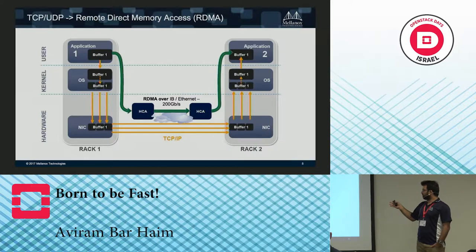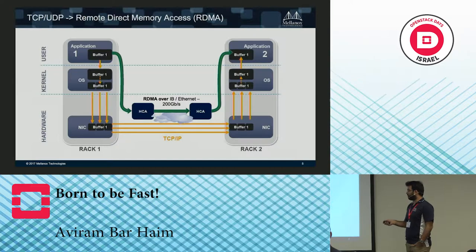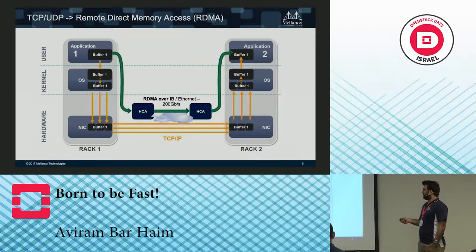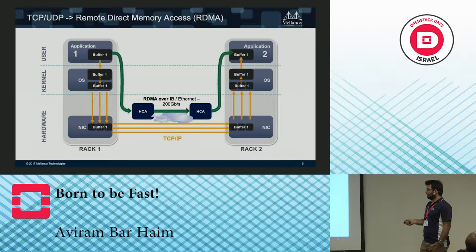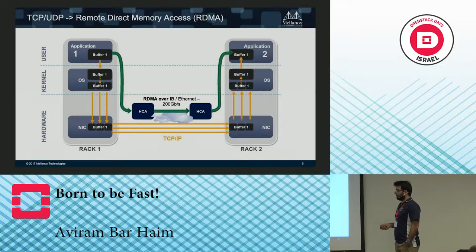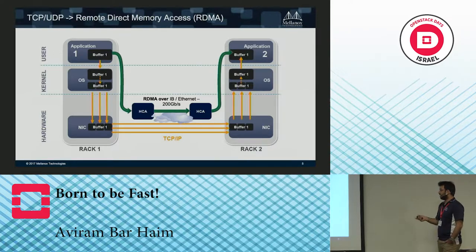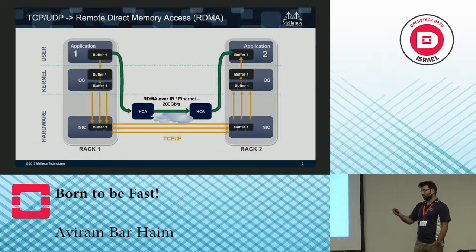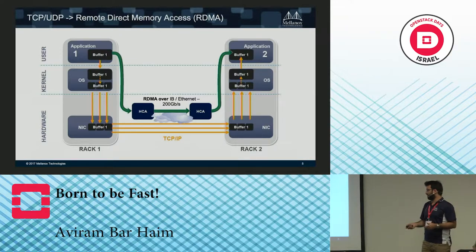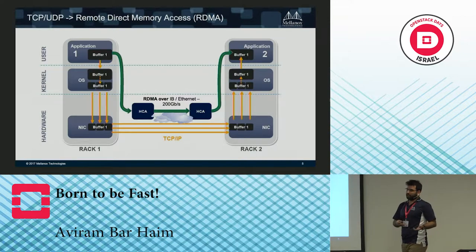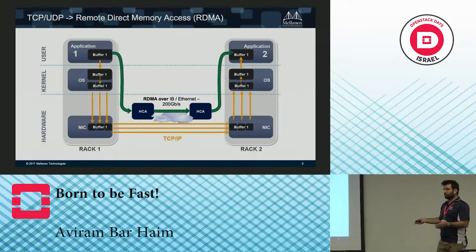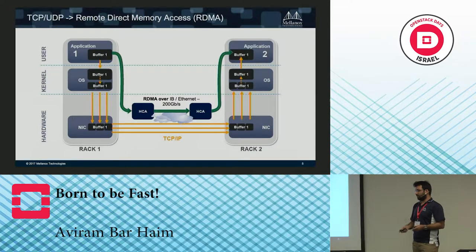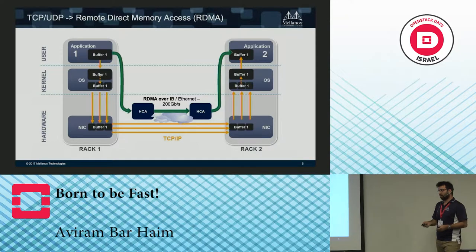RDMA comes alongside TCP and UDP. In traditional networking, a packet in one computer's application that needs to move to another computer's application must go through the kernel, then through the NIC, across to the other NIC, then decomposed in the other computer before reaching the destination application. With RDMA, the NICs can register to the other computer's memory and read and write directly between the two computers. This accelerates networking and data transfer, and with InfiniBand or Ethernet you can get 100 to 200 gigabit bandwidth with really low latency.